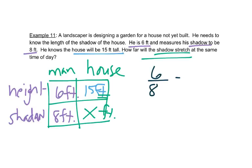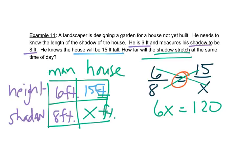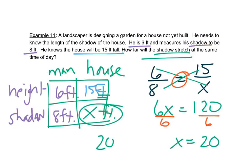So we'll set up our proportion and cross multiply. 6 times X is 6X, and 8 times 15 is 120. Notice that when you have an equal sign between them, you cross multiply. If there's a multiplication sign between them, you multiply straight across: numerator times numerator, denominator times denominator. That's really important to get straight. We'll divide both sides by 6 and get 20. And we know it's measured in feet, so the shadow will be 20 feet.